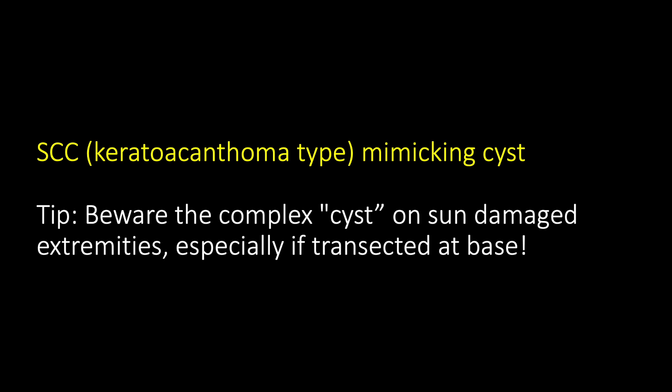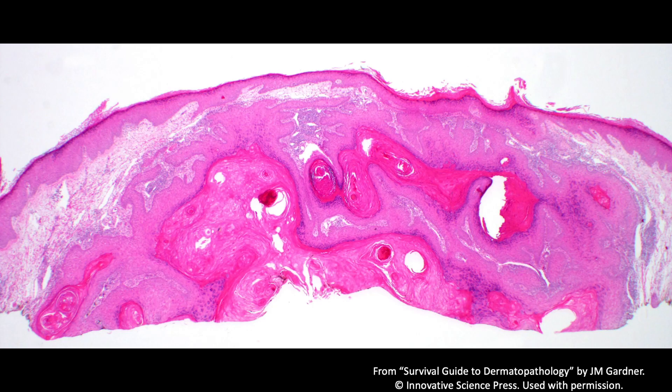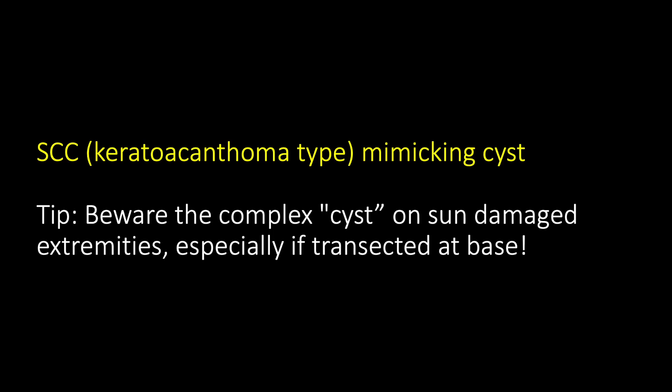We don't see cysts on the forearm that often, and especially if you see one right up close to the epidermis and it's very complex — even if there's no atypia and there are glassy keratinocytes — I want to see the base of that lesion. I'll add a comment that this is a squamous proliferation, there's not much atypia, but it's complex. I can't see the base; if there's concern clinically or if it persists or recurs, please excise it or repeat biopsy. This I would probably just call squamous cell carcinoma, keratoacanthoma type on the diagnostic line in my practice — others may do it differently.